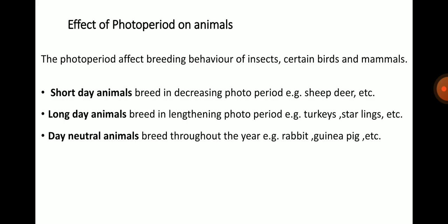Photoperiod also affects the breeding behavior of insects, certain birds and mammals. Animals can be divided into short day animals, long day animals and day neutral animals. Short day animals breed in decreasing photoperiod — examples include sheep and deer. Long day animals breed in lengthening photoperiod — examples include turkeys and starlings. Day neutral animals breed throughout the year — examples include rabbit and guinea pig.